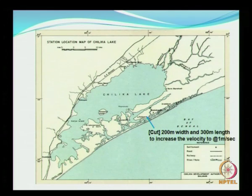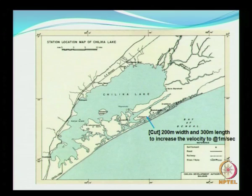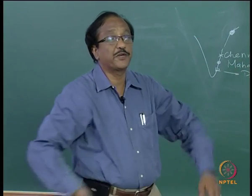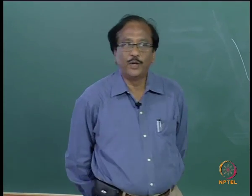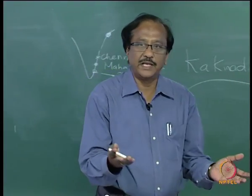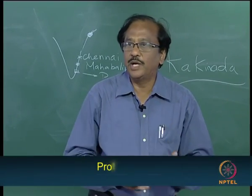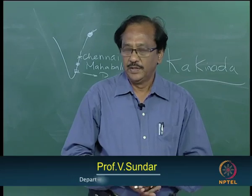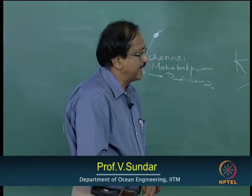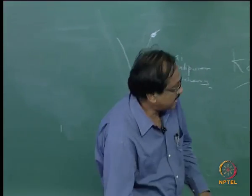On the other hand, fresh water flow due to monsoon also flows into the lake. So both sides have a problem — salt water is not coming in, but fresh water is coming in. What will happen to the brackish water lake? The PPM — the salt content — will go down. So how do you restore this lake? The idea was to cut open the bar or the spit.